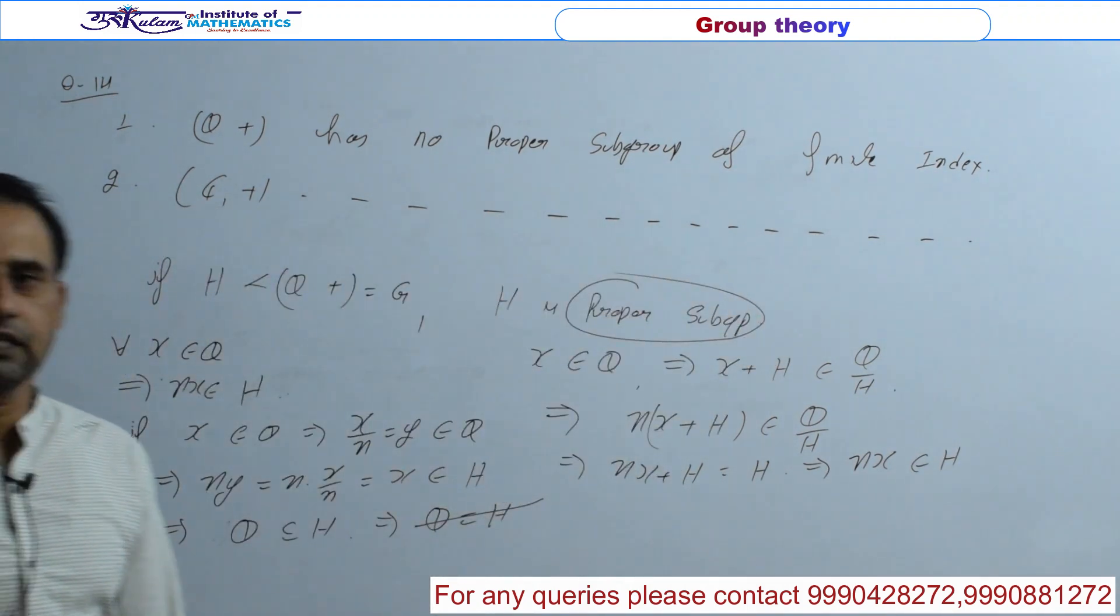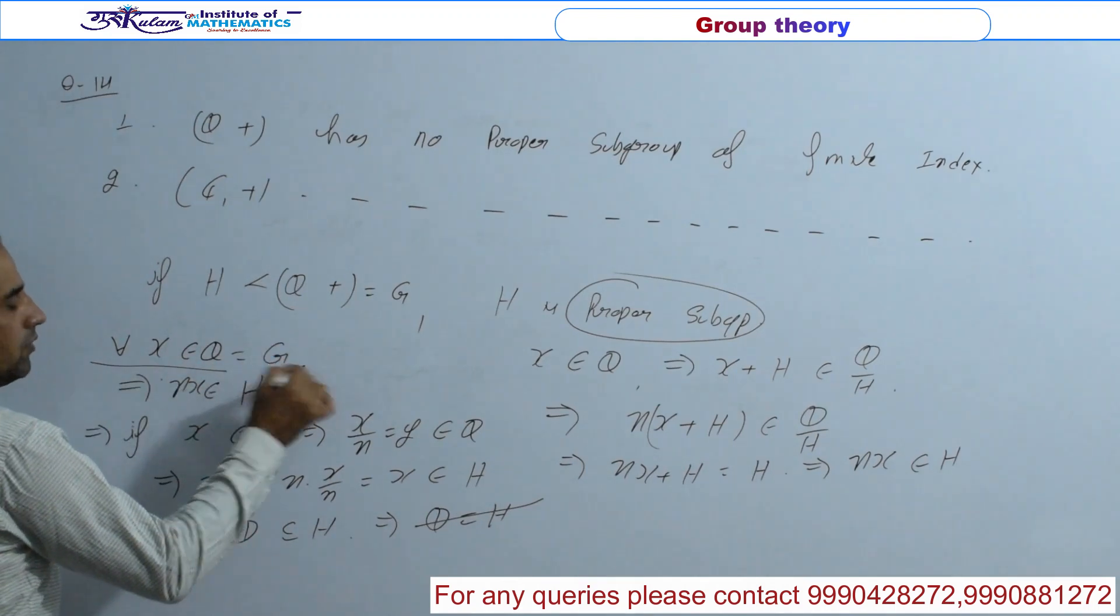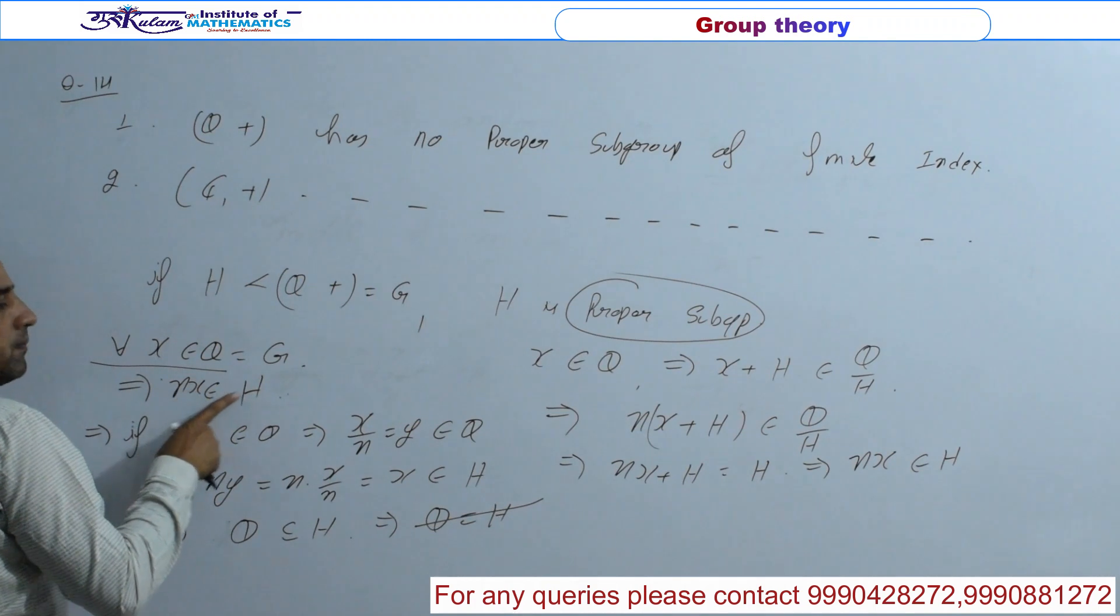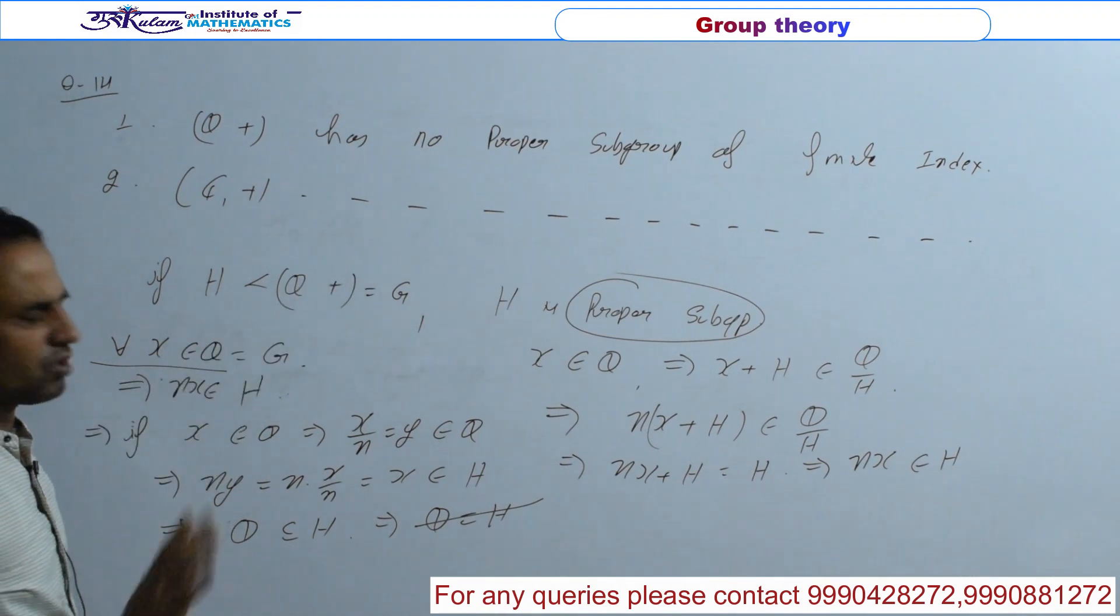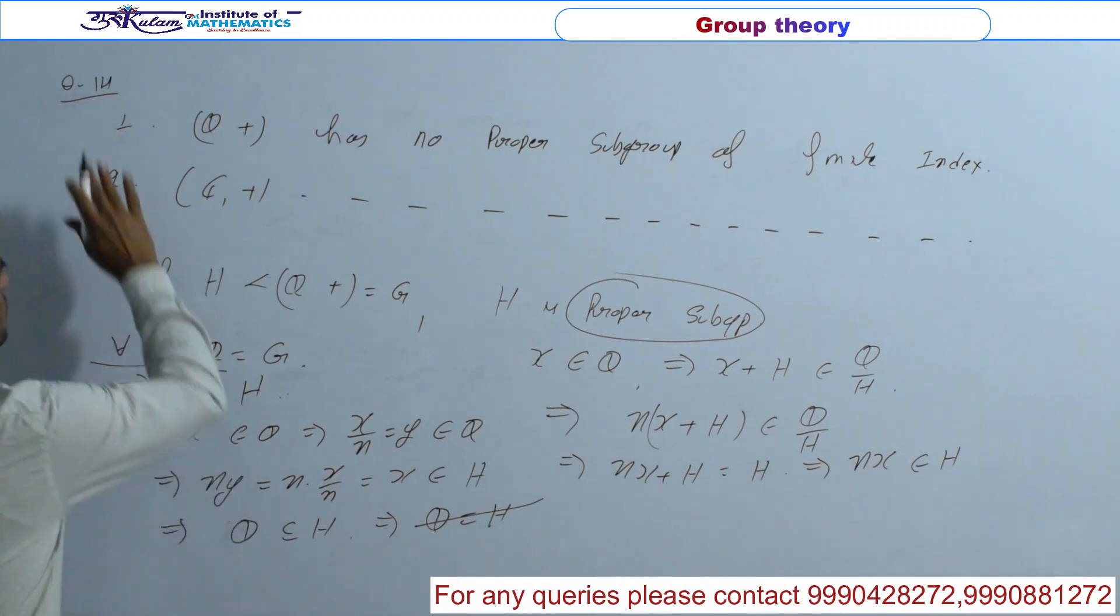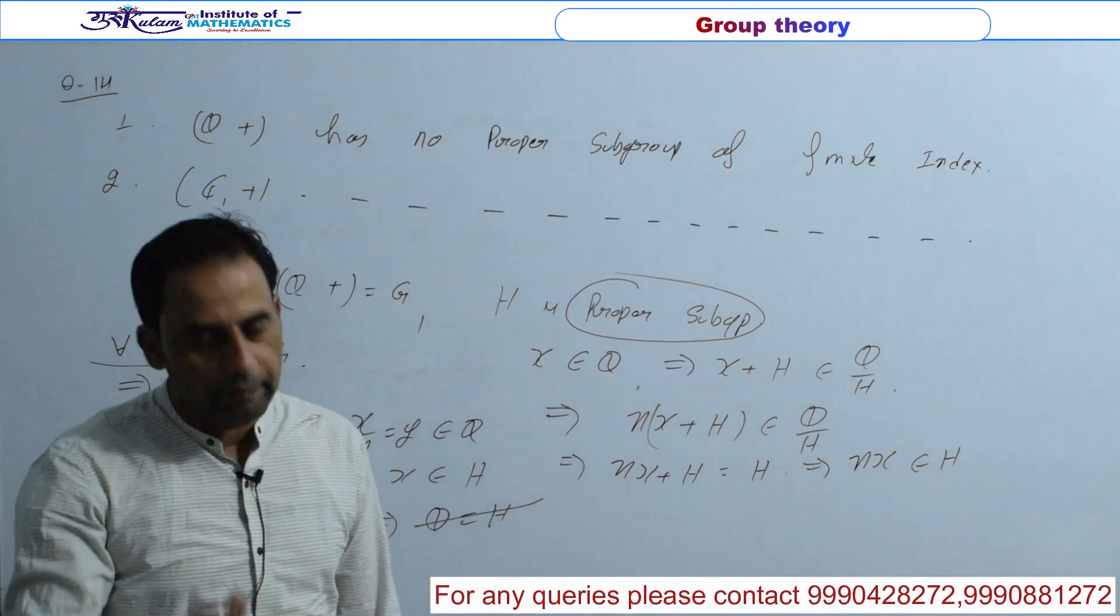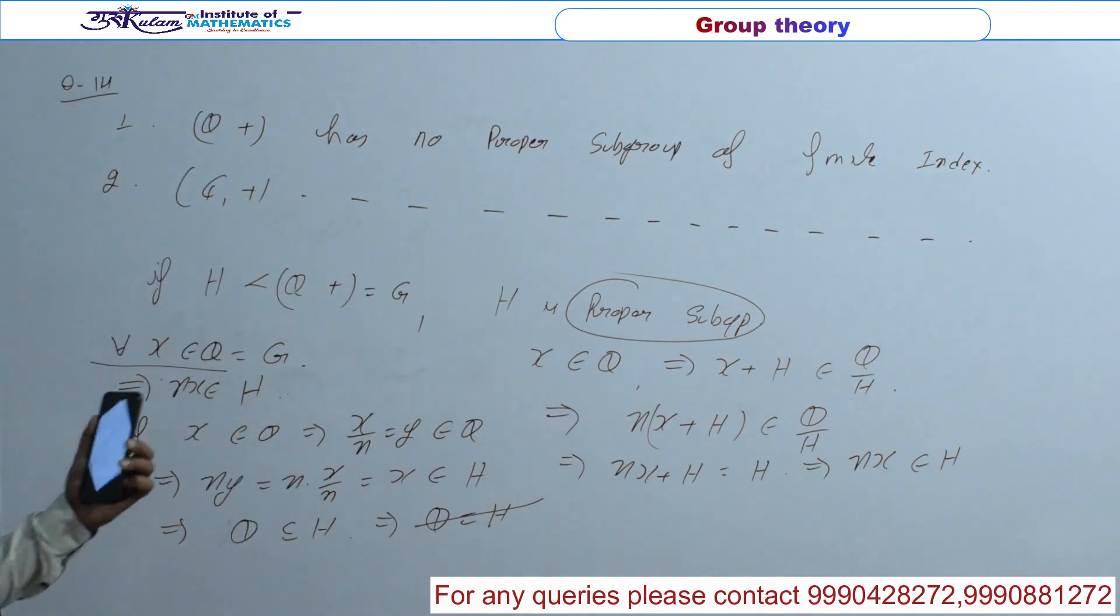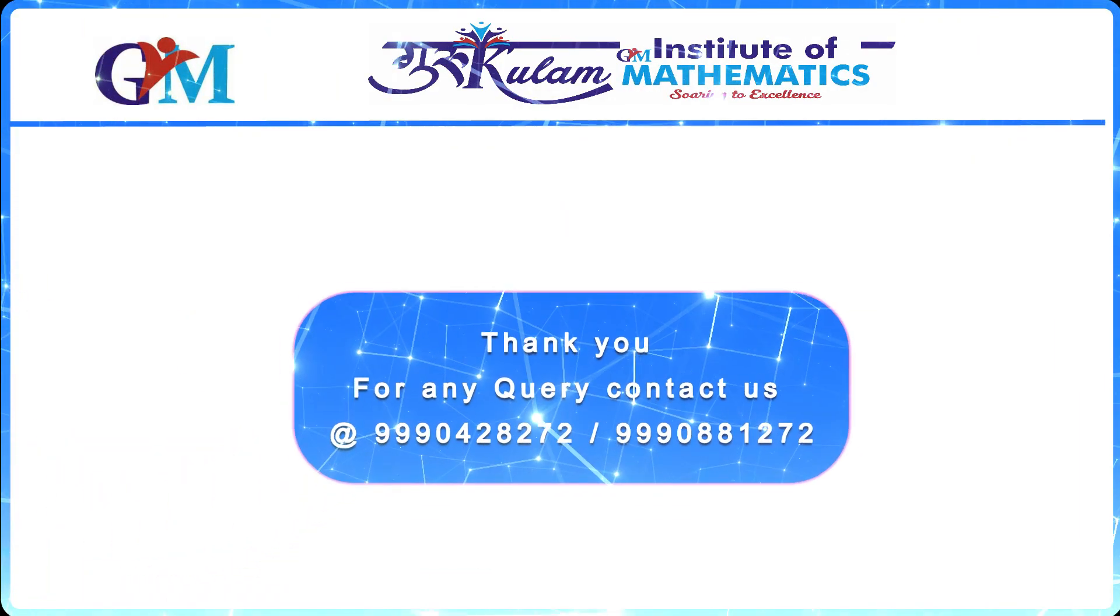So for any abelian group which is a contradiction. Similarly if I go to C plus, similar method. So these both statements should be correct. So Q plus and C plus there is no proper subgroup of finite index. Clear? So you have the answer: both of the statements are correct. So option A, both statements true, remaining all are false.